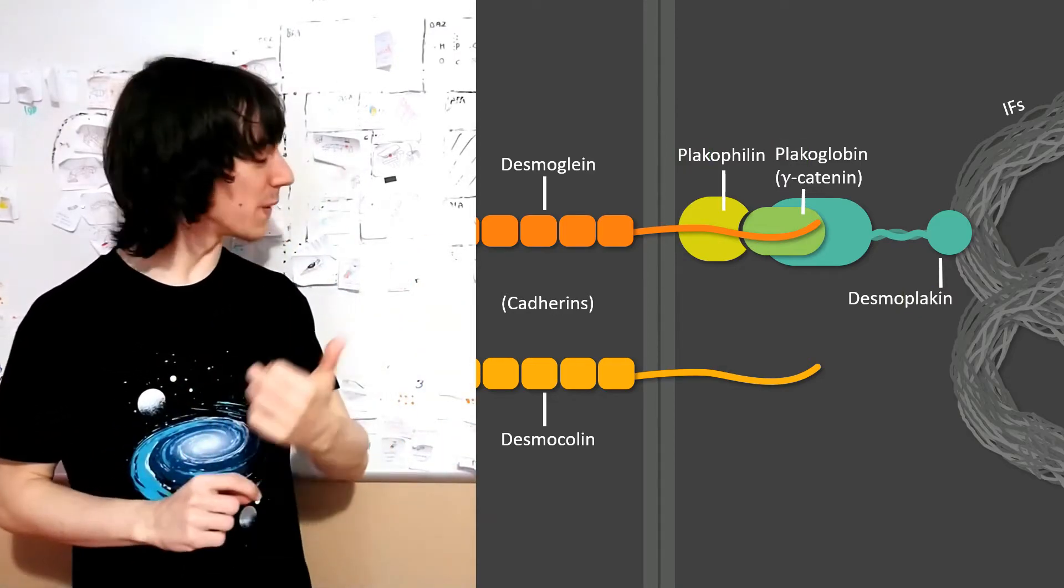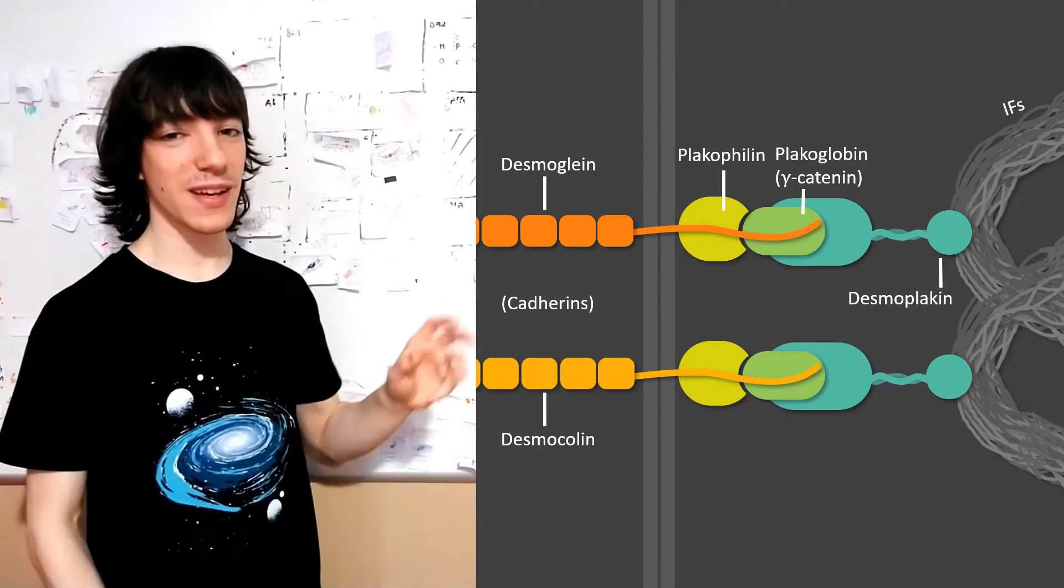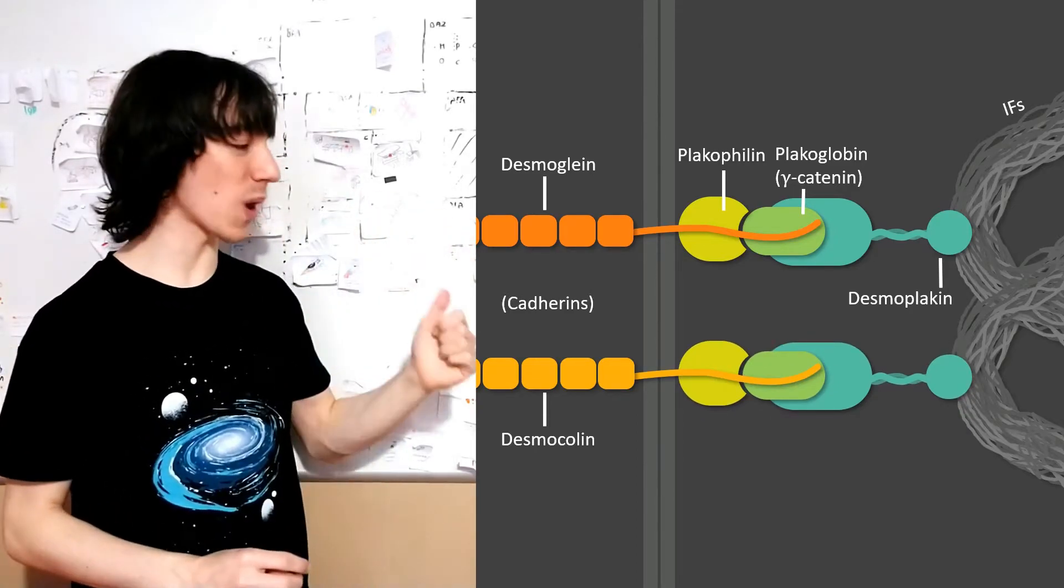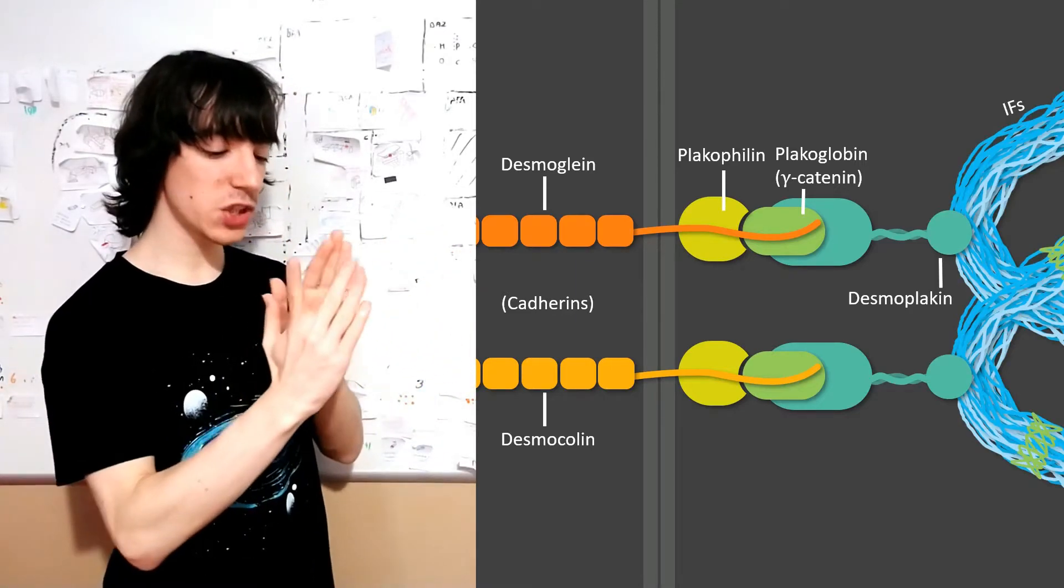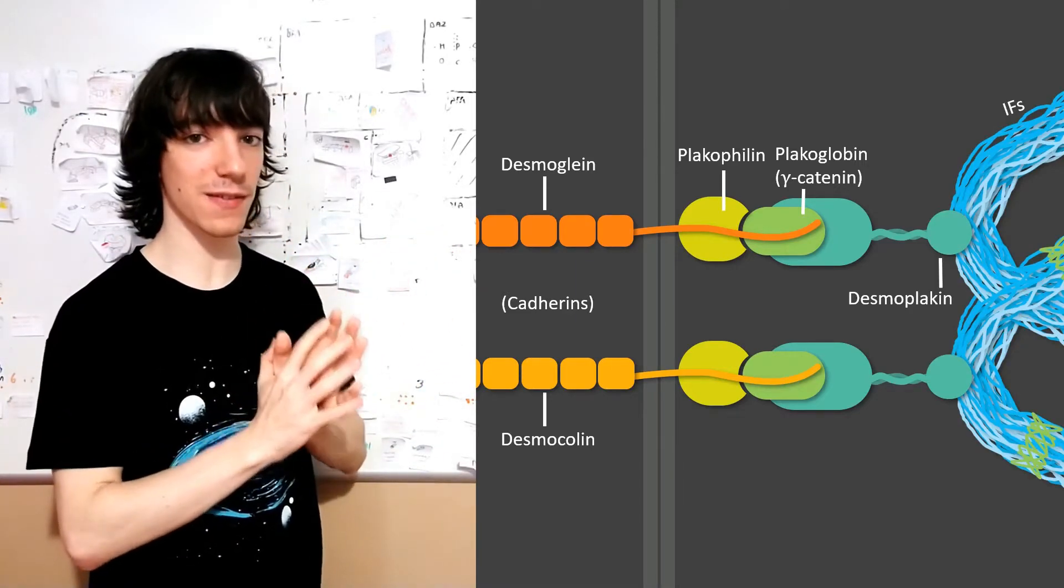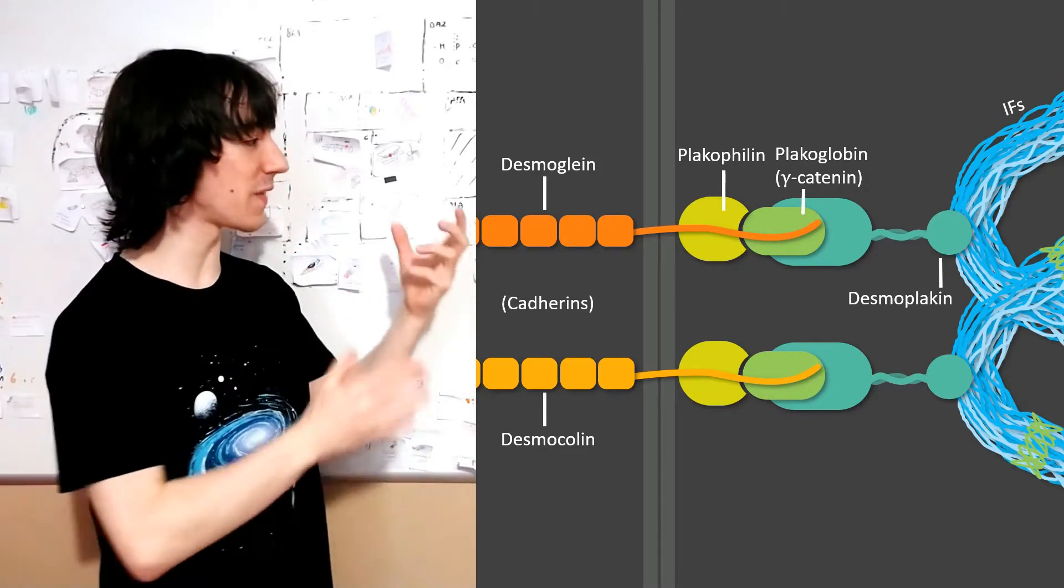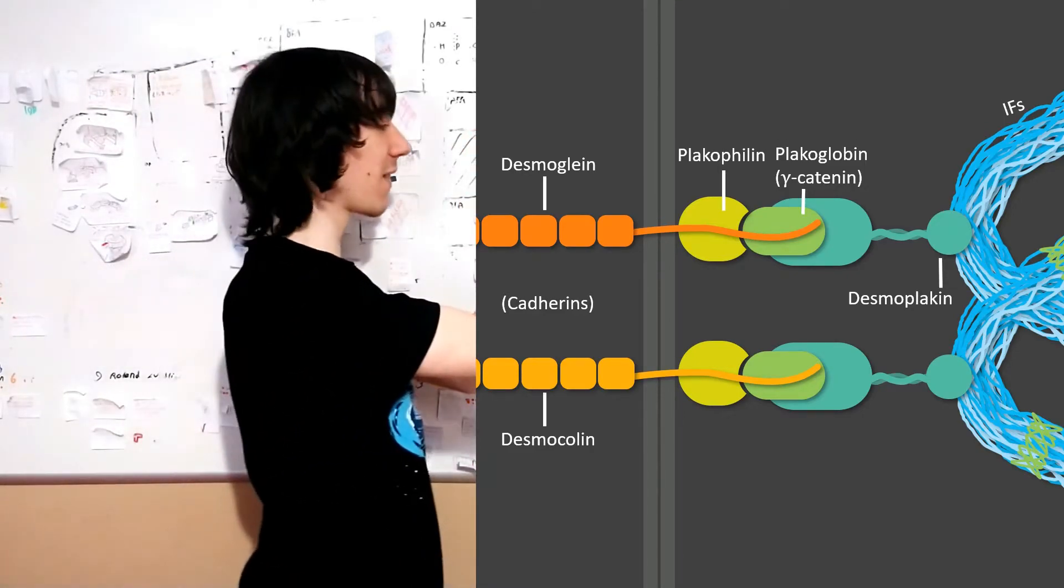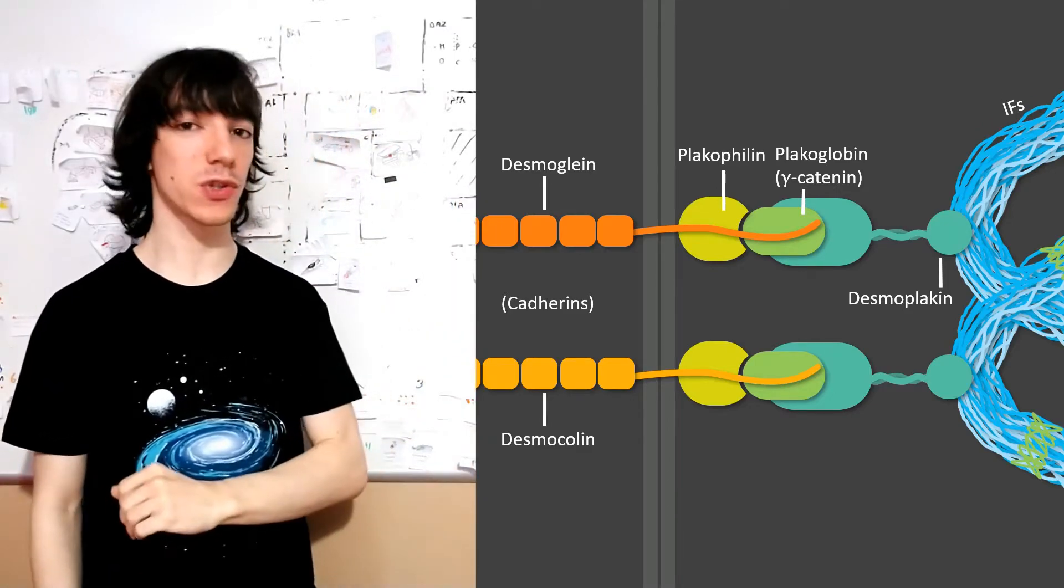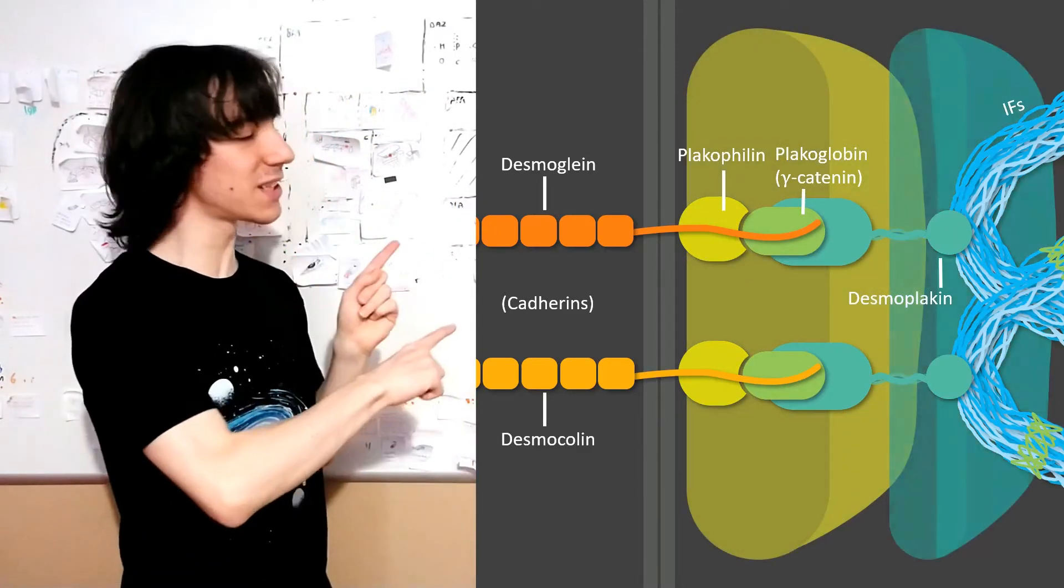And with that, we have a desmosome. Because desmocollin uses the same proteins as desmoglein, it's the same thing. When you look at this through a microscope, you will see two areas of denser stuff with more protein and a bit of separation in between. And that corresponds to the denser areas of plakophilin and plakoglobin and the side of desmoplakin that connects to intermediate filaments. That's why you also see desmosomes drawn like this with two plaques.